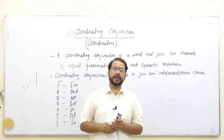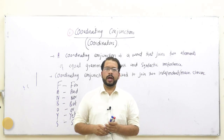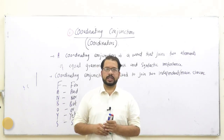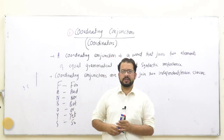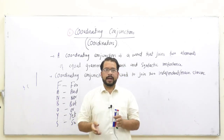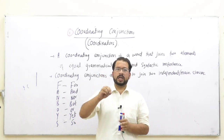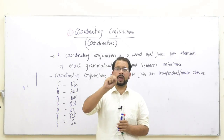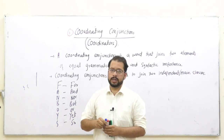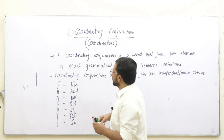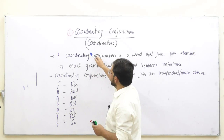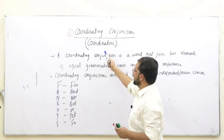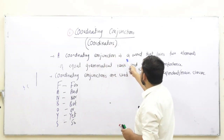In today's video we are going to have a discussion on coordinating conjunctions. Pehle hum thora sa iska definition discuss karenge, lekin humara jo basic discussion hoga woh is cheez pe hoga ke hum kis tarah ek ek coordinating conjunction ko use karte hain. So the definition of coordinating conjunction is: coordinating conjunctions ko hum coordinators bhi kehte hain.